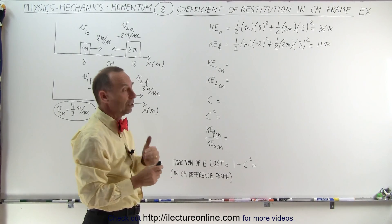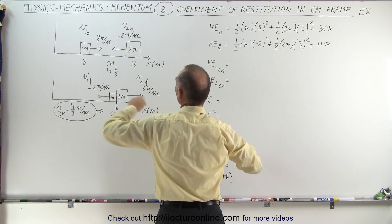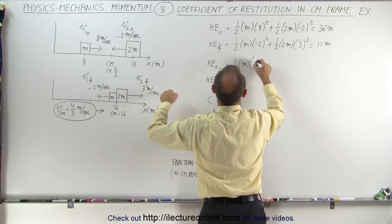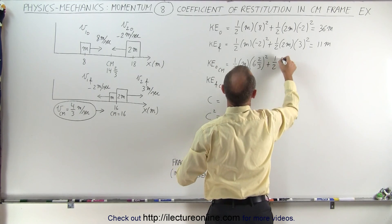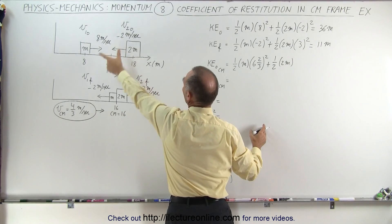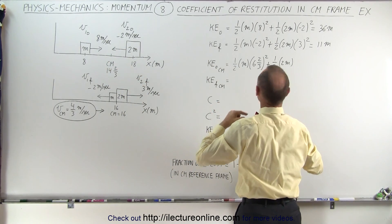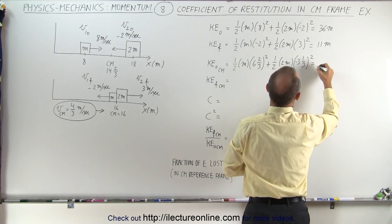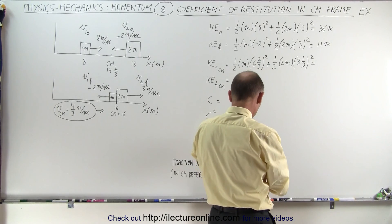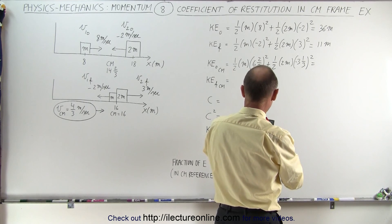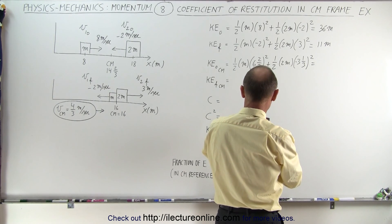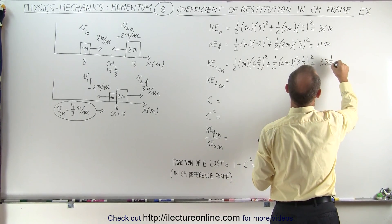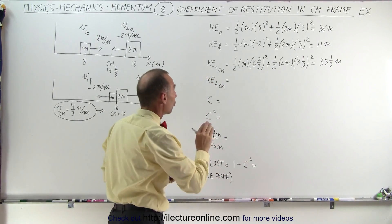Now we calculate the kinetic energies relative to the center of mass, which is moving to the right at 4/3 m/s. Before the collision: one-half times m times (8 minus 4/3) squared, which is (6 and 2/3) squared, plus one-half times 2m times (2 plus 4/3) squared, which is (3 and 1/3) squared. Using a calculator: 3.333 squared plus 6.6666 squared divided by 2 equals 33 and 1/3. So the kinetic energy before the collision relative to the center of mass is 33 and 1/3 times m.